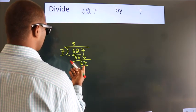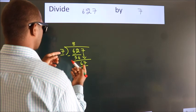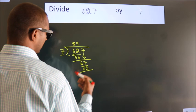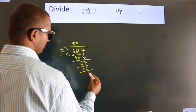A number close to 67 in the 7 table is 7 times 9, which is 63. Now we subtract and get 4.